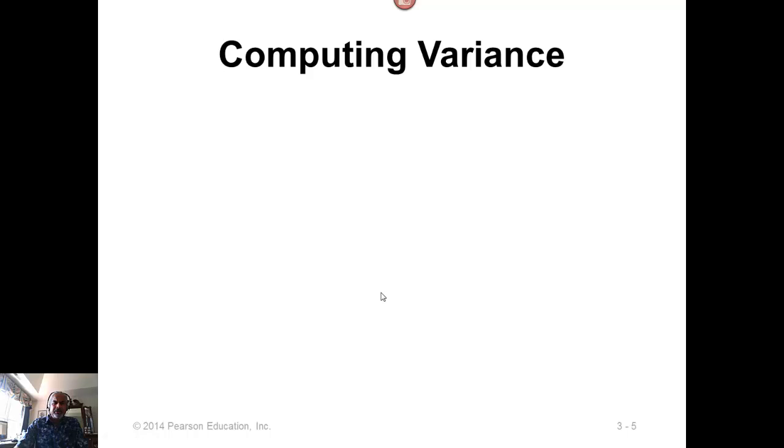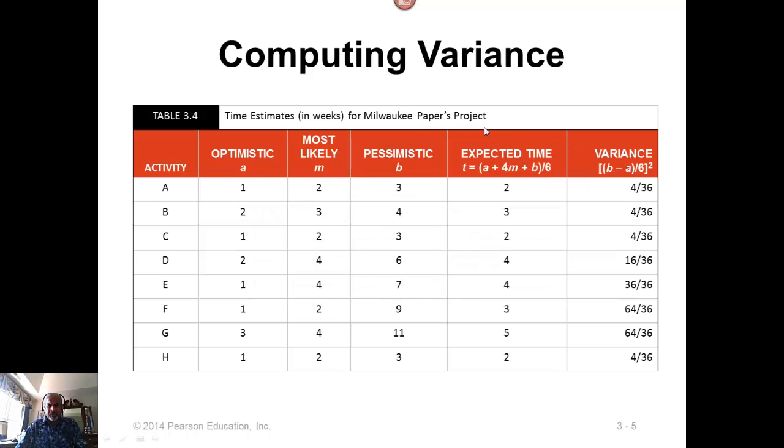Let's look at an example. This is the same example, the Milwaukee paper project. We have activities going from a through h, and let's assume that these are the three optimistic, most likely, and pessimistic estimates that we have come up with. Then, using this formula, we can compute the expected time, and using this formula, we compute the variance. Notice here that I'm not dividing the 36 into 4, because that increases the number of divisions, increases the amount of computation, and also reduces accuracy. I'll talk more about it in a little bit.